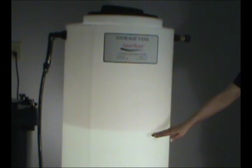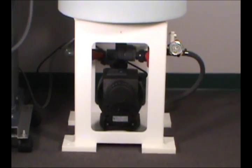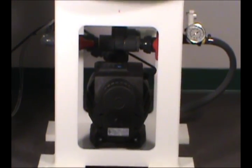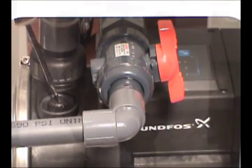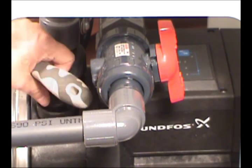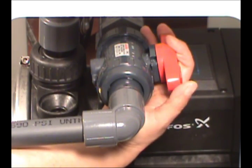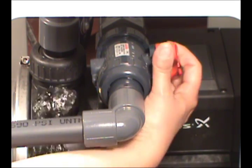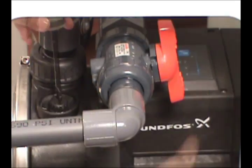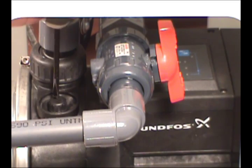When the storage tank is half full, it's time to prime the distribution pump. The distribution pump is located at the base of the storage tank. Remove the priming plug from the top of the pump. Slowly open the feed valve to the pump. After the pump chamber has filled with water, turn off the valve and replace the plug.